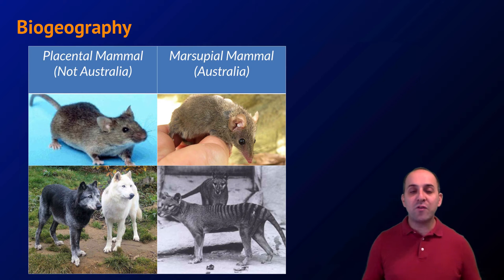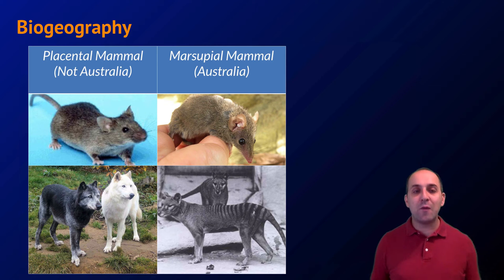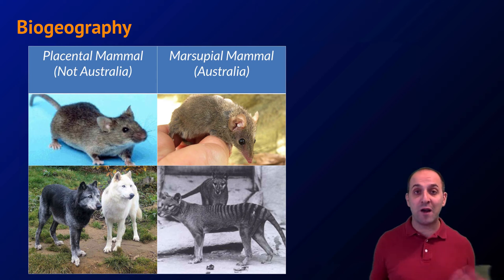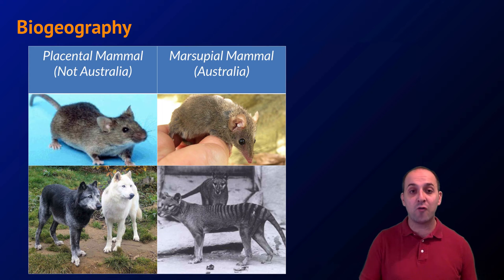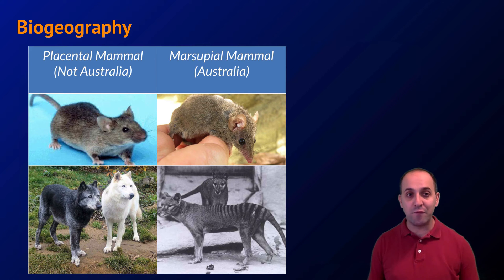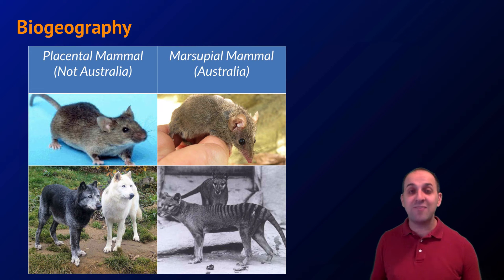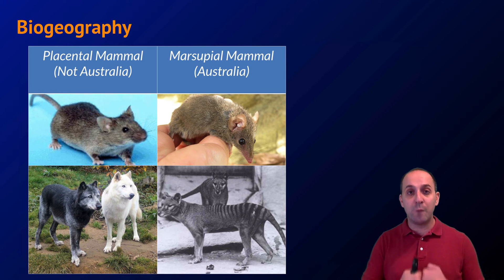The mammals on Australia tend to be marsupial, meaning offspring develop in a pouch on the outside of the mother's body, whereas mammals on other continents — including you and me — are placental mammals that develop inside the mother's body in a uterus. Comparing placental mammals to Australian marsupials, we see that mammals have evolved to occupy very similar roles in each case, from mice-like mammals all the way through to top predators like wolves. Just because there's a marsupial mouse and a placental mouse does not mean those two mice are closely related evolutionarily. That's the notion of biogeography.